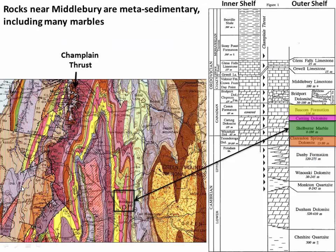Some other things to note about the local geology: most of the colorful rocks exposed in the Middlebury area are all meta-sedimentary rocks that were originally deposited in the outer shelf location. Many of these were originally limestones deposited in that reef environment but have been metamorphosed either into marbles or into dolomites. These really make up the important carbonate rocks that floor the Champlain Valley.